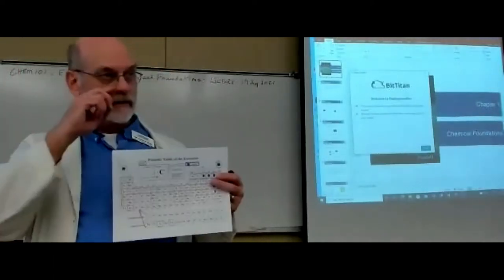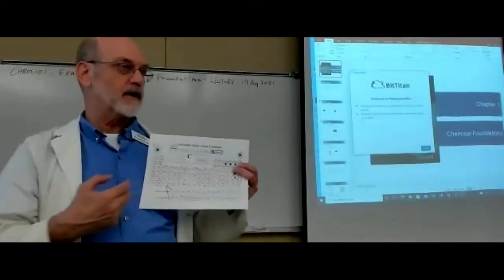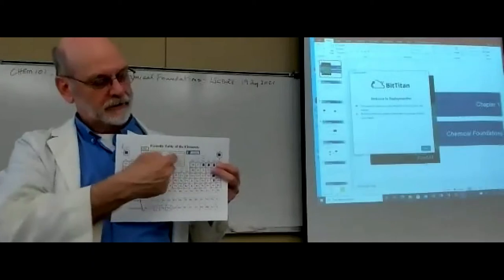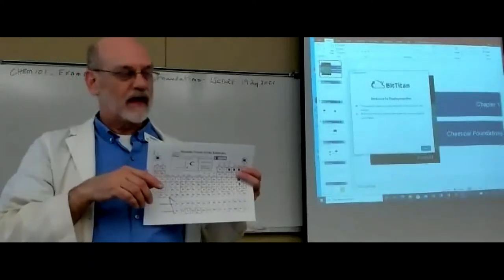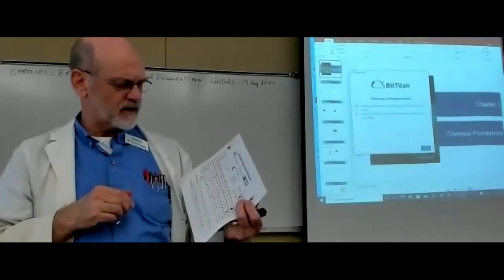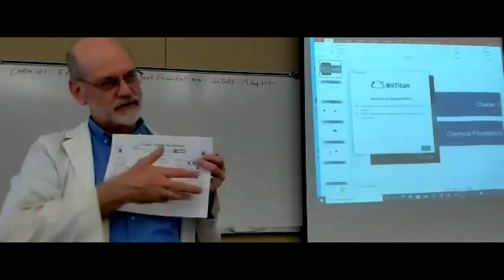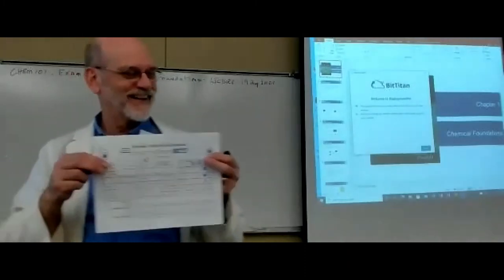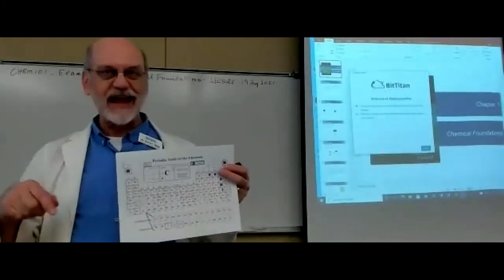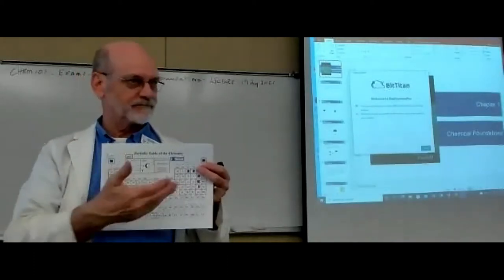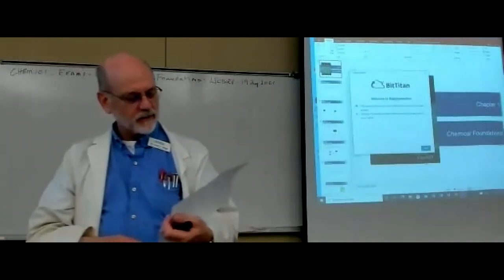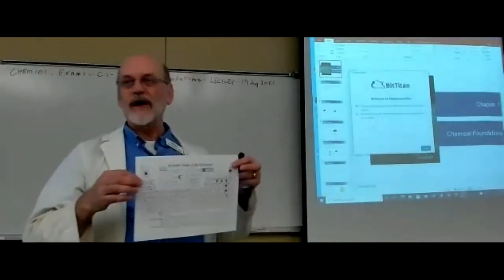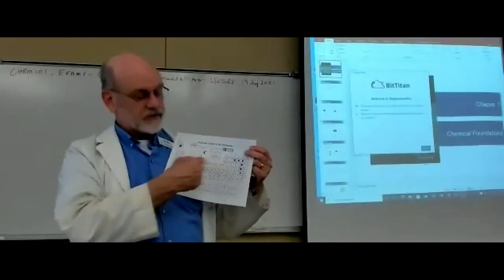You'll notice that in this periodic table some of the elements have red boxes around them. Those are the ones I want you to memorize. The best way is to make flashcards. Get a set of three-by-fives and write the symbol on one side, the name on the other. In the front cover of your book, you'll find an alphabetical list of symbols and names. Match them up, make your flashcards, and then just memorize the symbols.